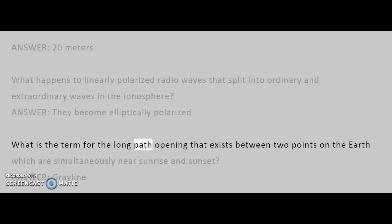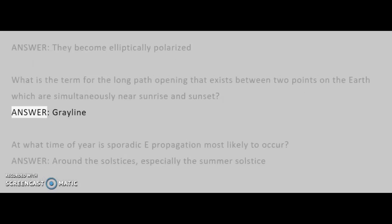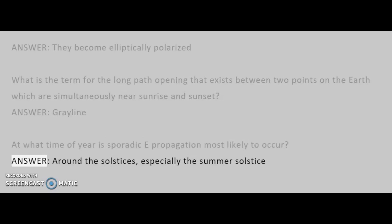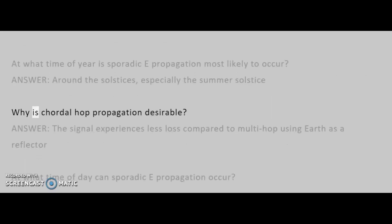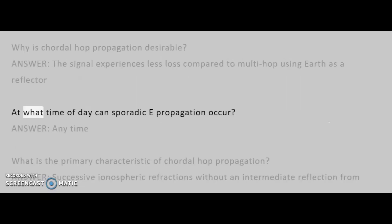What is the term for the long path opening that exists between two points on the Earth which are simultaneously near sunrise and sunset? Answer: gray line. At what time of year is sporadic-E propagation most likely to occur? Answer: around the solstices, especially the summer solstice. Why is chordal hop propagation desirable? Answer: the signal experiences less loss compared to multi-hop using Earth as a reflector. At what time of day can sporadic-E propagation occur? Answer: any time.